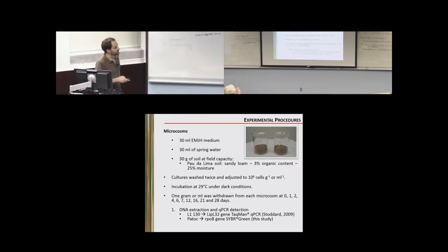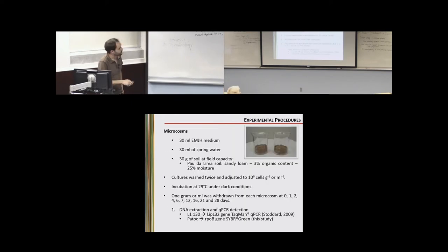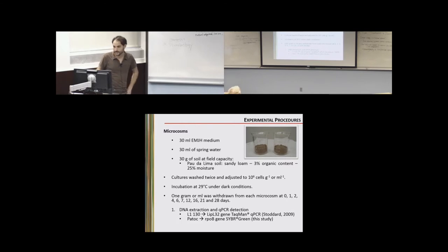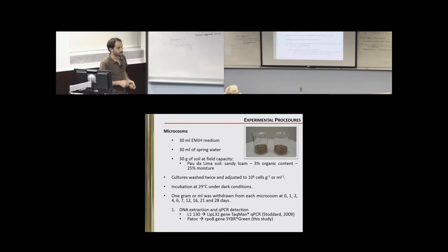We tried to reproduce this in microcosms in the lab. As a control we used 30 mLs of EMJH medium, then as a model for water we used spring water — not autoclaved, so it contained the autonomous microbiota of spring water. We used 30 g of soil at field capacity, meaning it's a pretty moist soil. The soil was taken from the urban slum of Pau de Lima — a sandy loam soil with a pretty low organic content of only 3%, and field capacity was adjusted to 25% moisture.